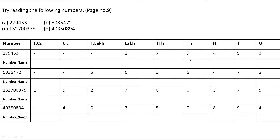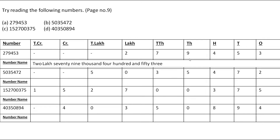So the number name will be 2,07,9453. In the next example, the digits are five, zero, three, five, four, seven, two. Five and zero are in the Lakh group, three and five are in the Thousands group, and four, seven, two are in the Ones group. So the number name will be 50,35,472.